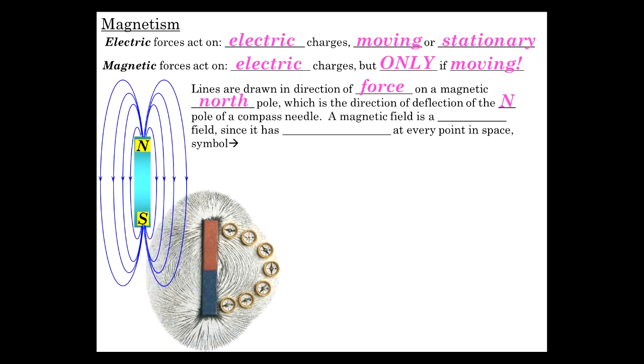Now, a magnetic field is a vector field since it has magnitude and direction in every point in space. And so, I'm actually drawing the field lines here. These are the field lines showing the direction that the compass needle would point if you put a compass needle in that field.